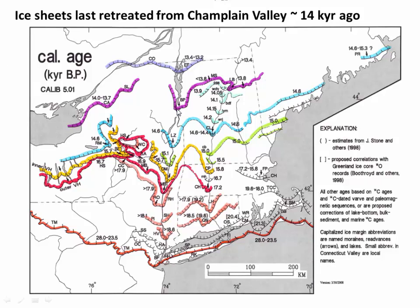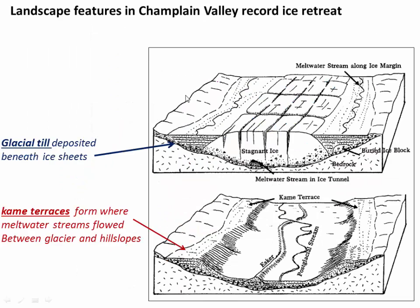As that ice sheet retreated, there was a big ice lobe concentrated down in the Champlain Valley, and as it melted it left specific deposits. We see a lot of glacial till — coarse, boulder-rich layers — in the mountains and deeper in the valleys. Another really important feature is sediment deposited by rivers running along the edge of this stagnant ice lobe, depositing material between the ice lobe and the mountain front around where East Middlebury is. Once the ice lobe finally melted, it left behind what are called kame terraces: flat benches of river sediment right up against the mountain flank.